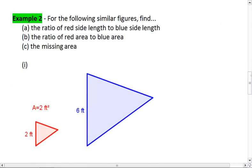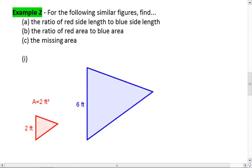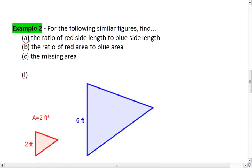Let's look at another example. For the following similar figures, I want you to find first the ratio of the red side length to the blue side length, then give me the ratio of the red area to the blue area, and finally I want you to find the missing area, whether it's red or blue. Try this on your own first, and then resume the video when you're ready to check your solution.